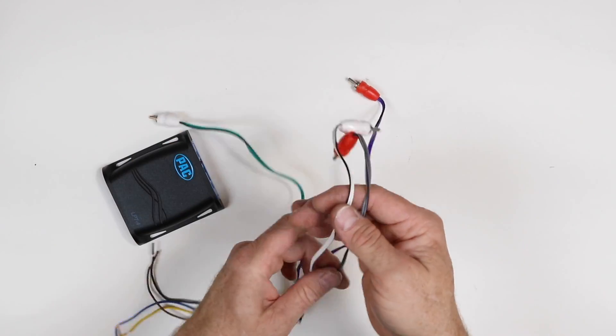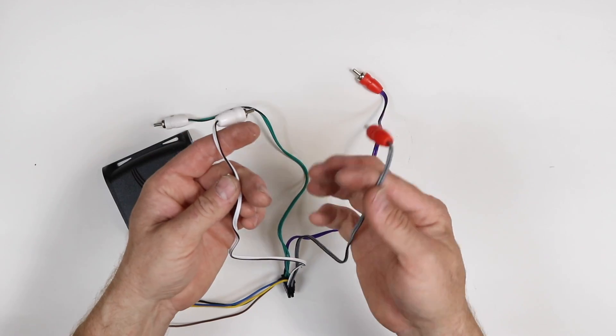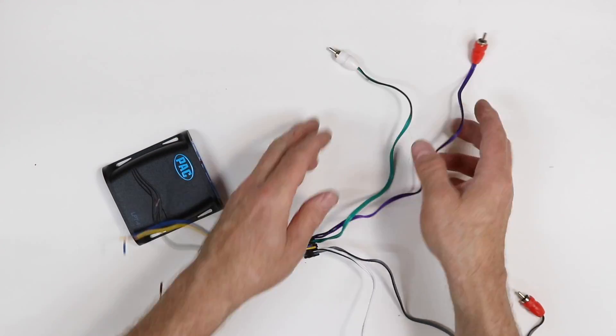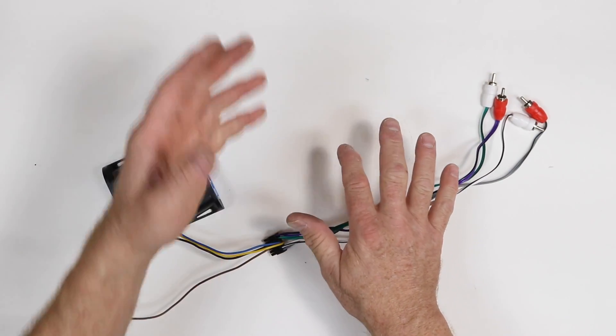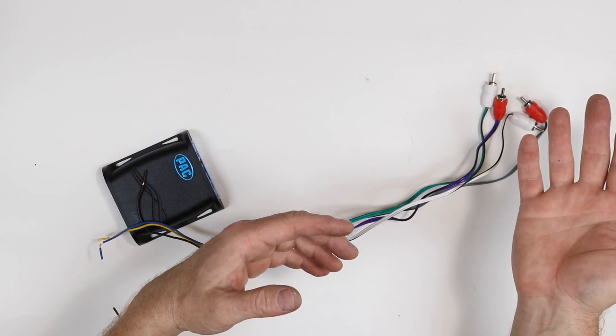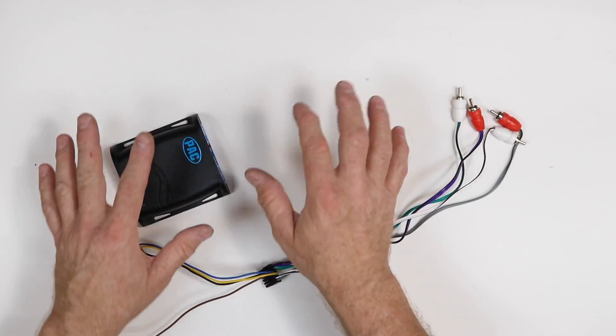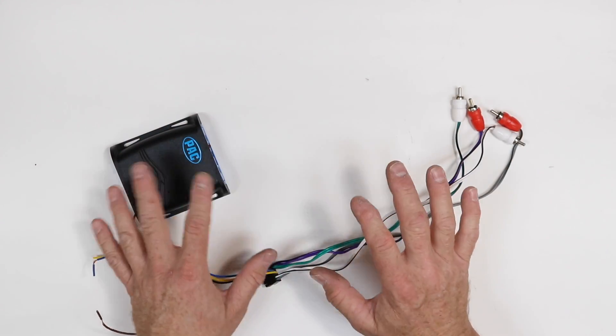What we want to look at today are these guys right here. We have the fronts, which are white and gray, and the rears, which are green and purple. We're going to just do a two-channel application, meaning like a driver, because it's a mirror on the other side.